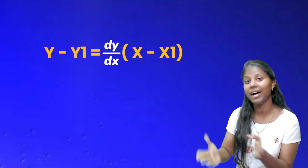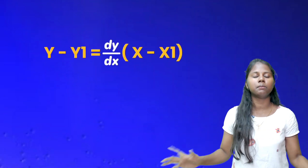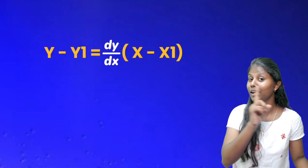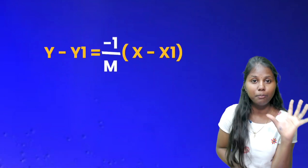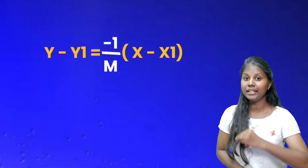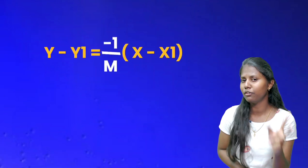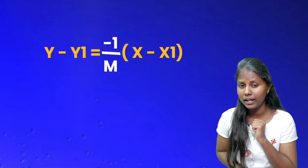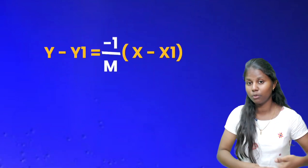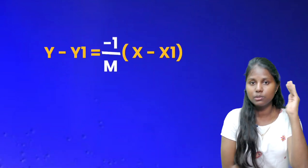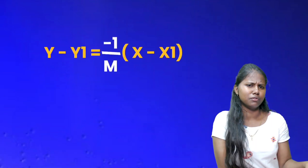That is the slope. So, what is the difference? The slope of the tangent and the slope of the normal - the slope of the normal is minus 1 by m. So if we have a normal equation, we can derive it from there.